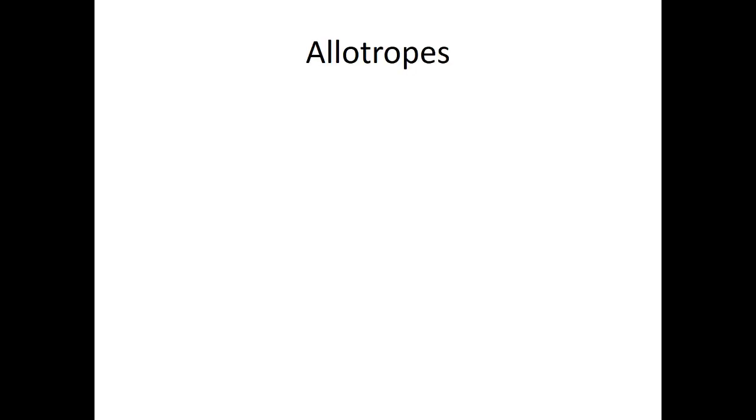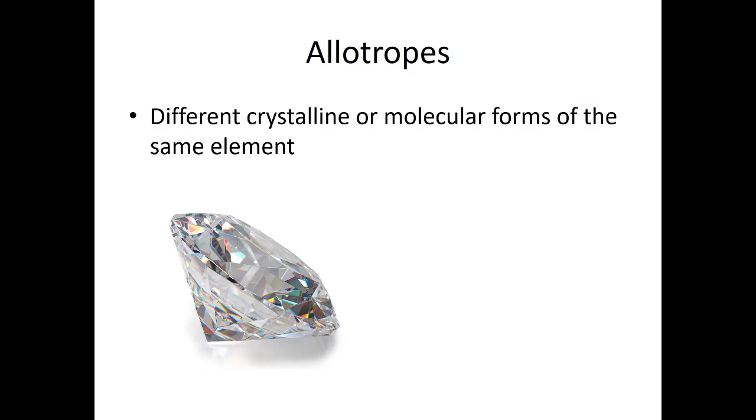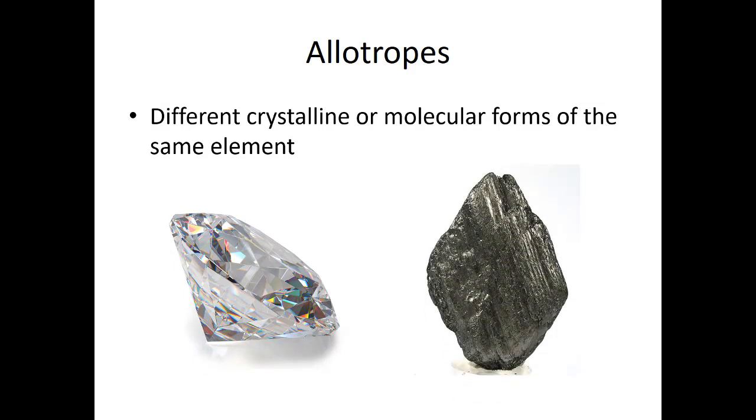allotropes. So what is allotropes? Different crystalline or molecular forms of the same element are called allotropes. For example, diamond and graphite, both of them are made up of carbon atoms, but they have different properties due to the different arrangement of atoms. We can call these two substances allotropes.